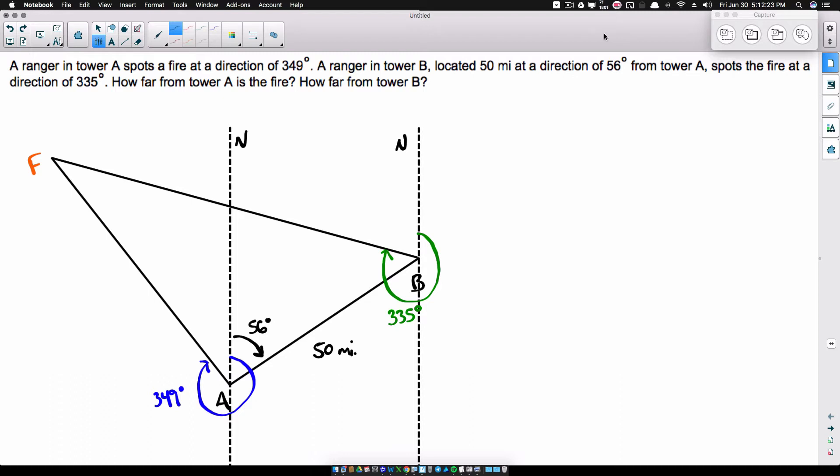What we have here is a ranger in tower A spots a fire at a direction of 349 degrees. So that's what we have down here. I'm going to show it to you in the picture as well. So we got this tower A. When it spots a fire at a direction of 349 degrees, there's two types of compass bearing problems. This one here, you're just given a straight up angle. And when you have a direction and you're given just an angle, you always start north, so think straight up, and we go clockwise 349 degrees. So we're going almost all the way back around. Well, that's going to give me a big hint for this angle right here in a second. But now let's move on to the next part.